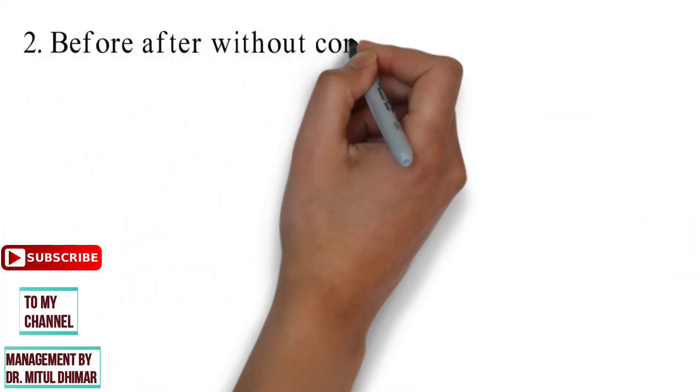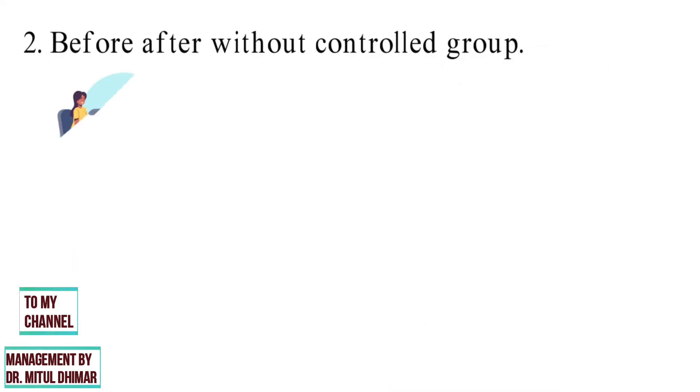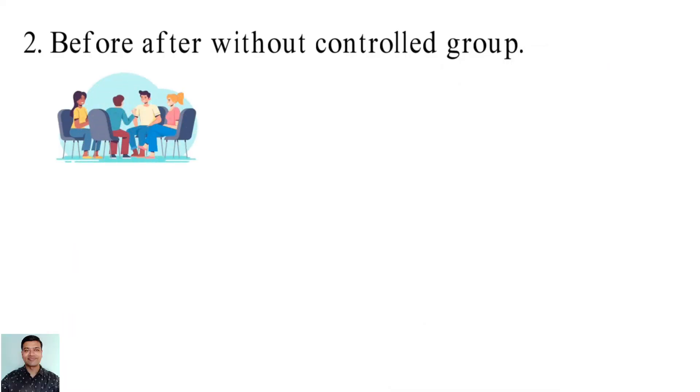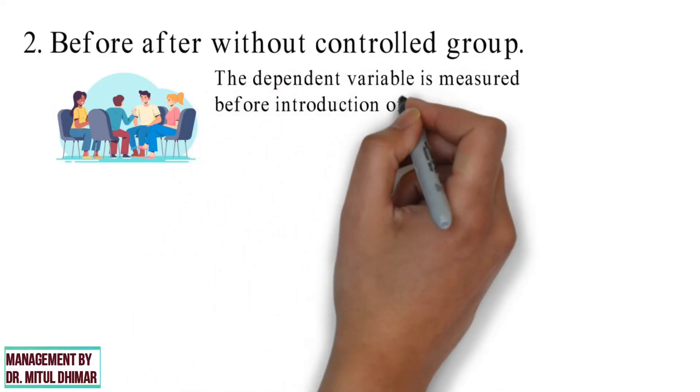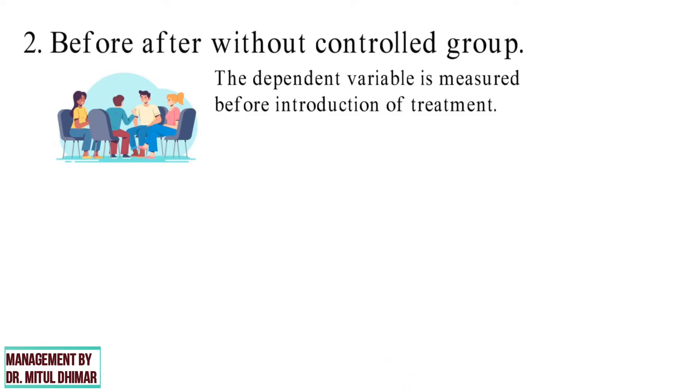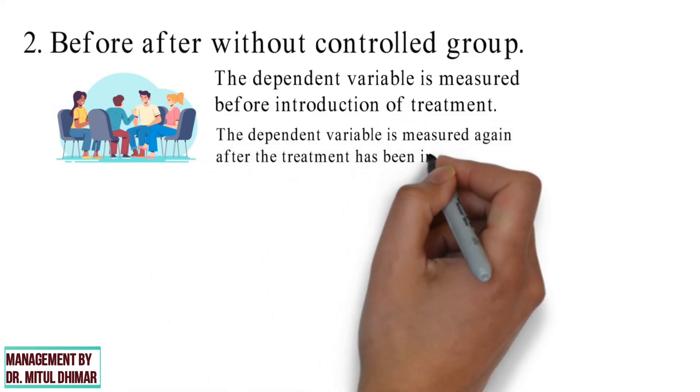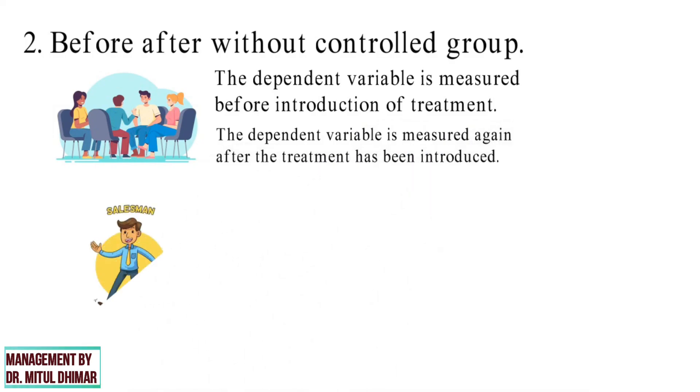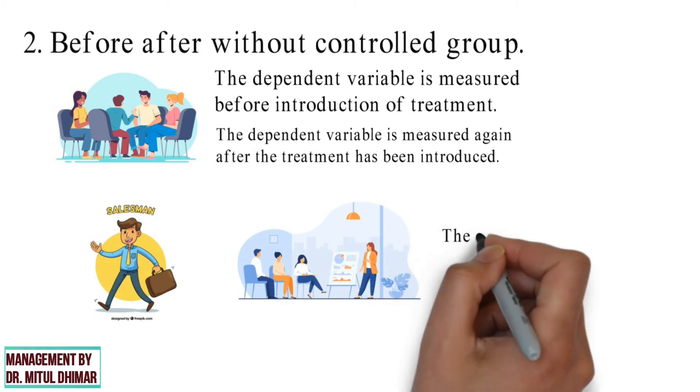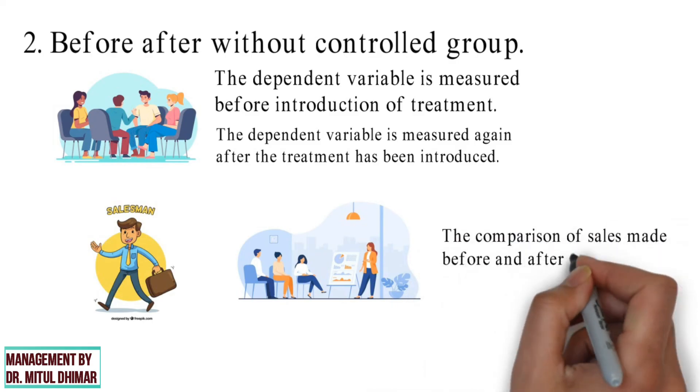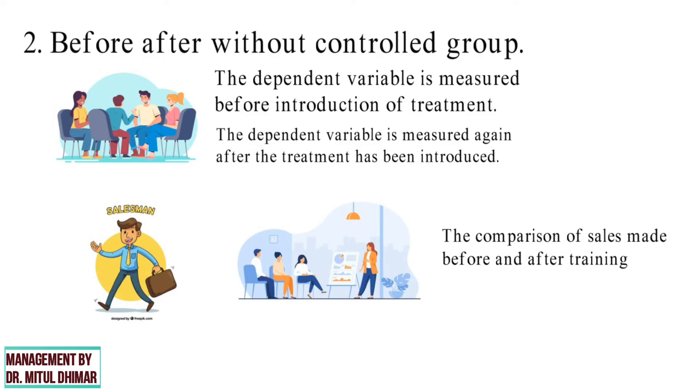Number two. Before after without control group. In this design, a single group or test area is selected and the dependent variable is measured before introduction of treatment. Then the treatment is introduced and the dependent variable is measured again after the treatment has been introduced. For example, we know the sales made by the sales people for specific period. Now we provide them training for a specific period and then we measure sales. Therefore, the comparison of sales made after training with sales made during the corresponding period before training.